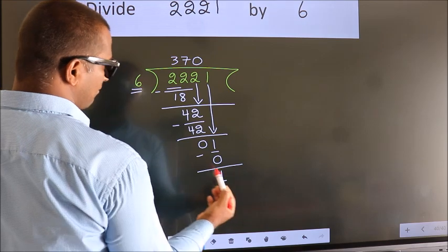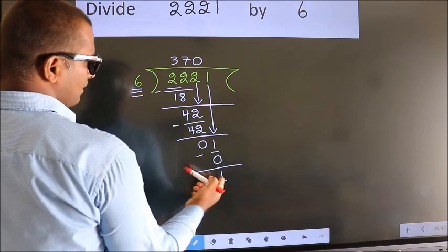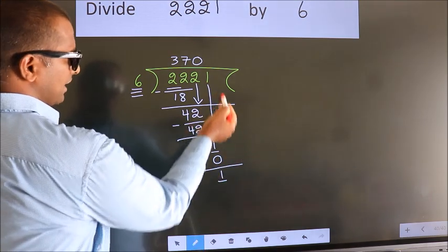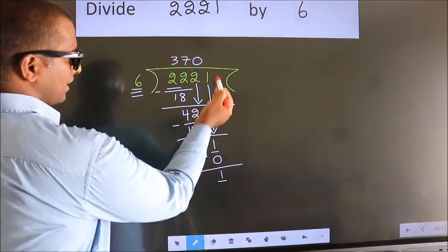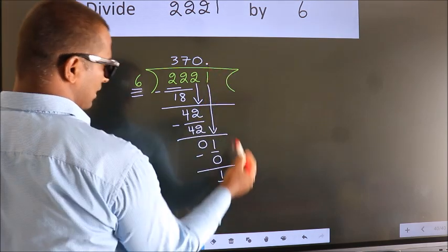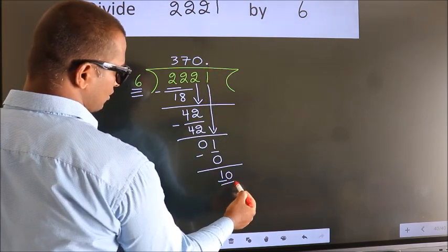Here we have 1, here 6. 1 smaller than 6. And we did not bring any number down. So now we can put dot take 0. So 10.